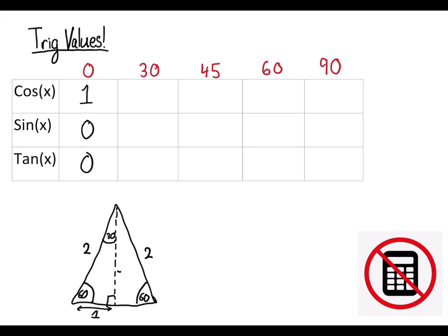Now using Pythagoras we'll find that this length is going to be square root of 2 squared minus 1 squared, which is equal to root 3. So this side length is going to be root 3. Now using trigonometry, we can work out all the values for 30 degrees and 60 degrees. I'll show you how to do one or two of them, and then you should be able to figure out the rest.